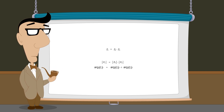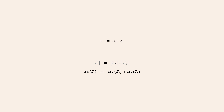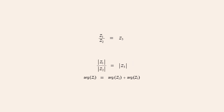We can also use these relationships to derive the relationship between the vectors of divided complex numbers and their quotient. To derive the vector relationships for complex division, we divide both sides of the first equation by z2, and divide both sides of the second equation by the modulus of z2. Likewise, in the third equation we subtract the argument of z2 from both sides. So this tells us that when we divide a complex number z1 by another complex number z2, producing the quotient z3, the modulus of the quotient will be equal to the modulus of z1 divided by the modulus of z2, and the argument of the quotient will be equal to the argument of z1 minus the argument of z2.